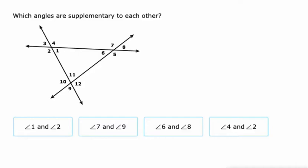Supplementary. They add up to 180 degrees. Angle one and angle two? Yeah. They also happen to be adjacent, but they make a straight line there. So that's how we know that they are supplementary. Seven and nine. No way. Six and eight. Those are vertical. Four and two. Those are also vertical.